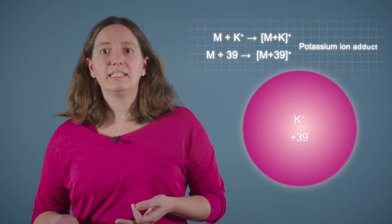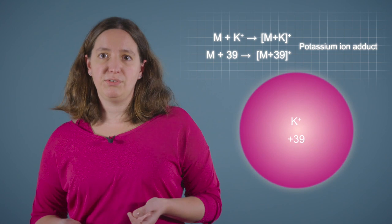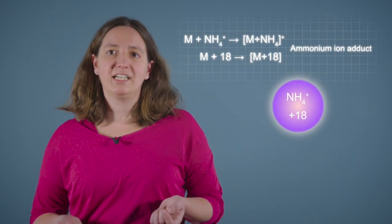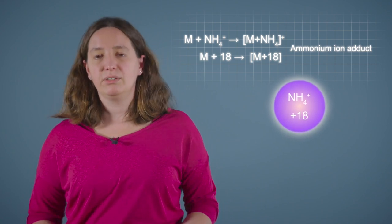Potassium ions make singly charged adduct ions 39 mass units heavier than the analyte molecules, and ammonium ions make singly charged adduct ions 18 mass units heavier than the analyte molecules.